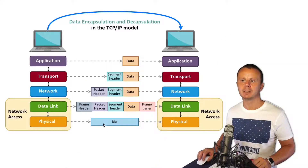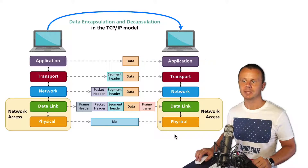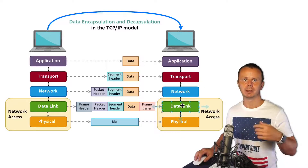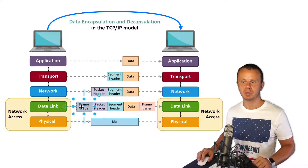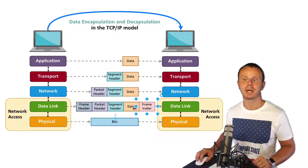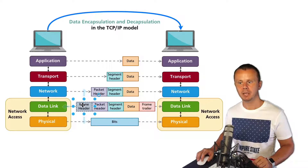Now let's discuss how this process is performed on the opposite side. On the recipient side, this process is called decapsulation. When data is received at the physical layer, it goes up to the data link layer. The data link layer reads only the frame header and frame trailer — it does not look into inner headers like the packet header or segment header.